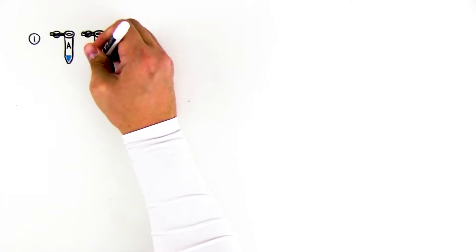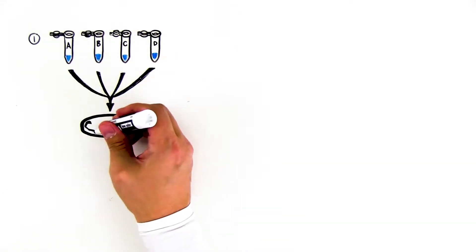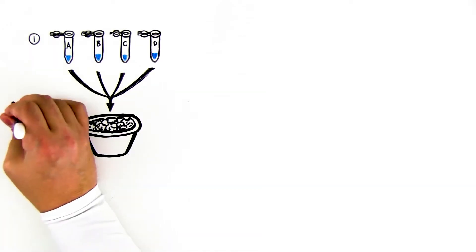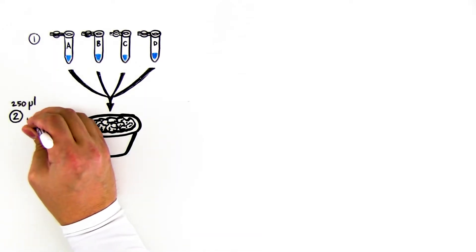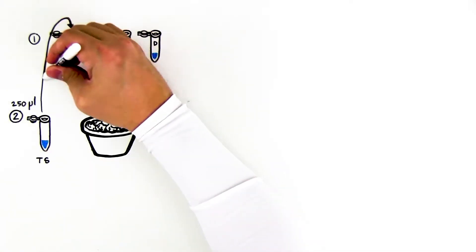Step 1: Label four 2-milliliter microcentrifuge tubes A through D and place on ice. Step 2: Add 250 microliters ice-cold transformation solution, TS, to each tube. Place back on ice.